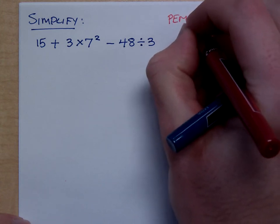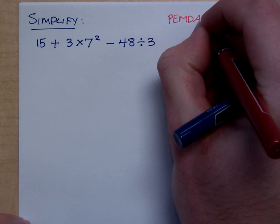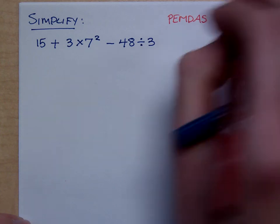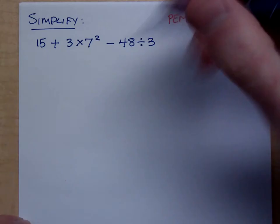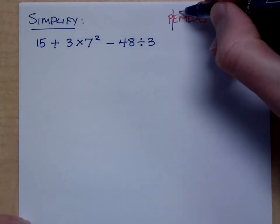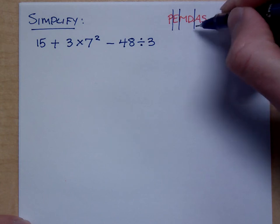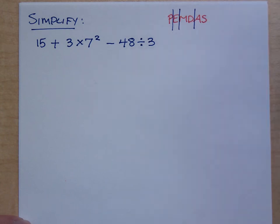How many steps are there to PEMDAS? Four. You've got parentheses, exponents, multiplication and division, and then adding and subtracting.